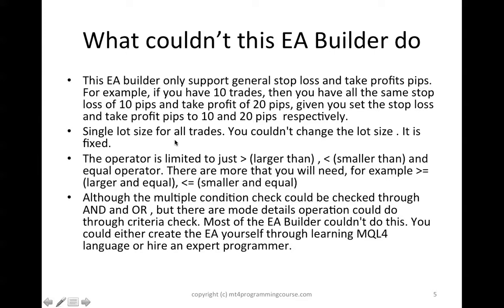Next, this EA Builder only supports larger than, smaller than, and equal operators to compare prices. But sometimes you need more operators, like larger-than-or-equal-to or smaller-than-or-equal-to. Also, for multiple condition checks, the EA Builder supports only AND and OR operators, but there are more detailed criteria checks you might want to do that it doesn't support. The solution is either to build the EA yourself or hire an expert programmer.